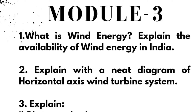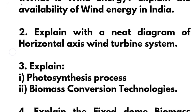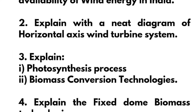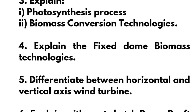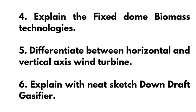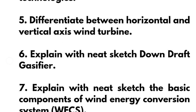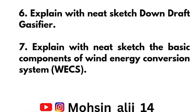In Module 3: explain wind energy and the availability of wind energy in India; explain with neat diagram the horizontal axis wind turbine system; explain the photosynthesis process and biomass conversion technologies; explain the fixed dome biomass technology; differentiate between horizontal and vertical axis wind turbines; explain with neat sketch the downdraft gasifier; and explain with neat sketch the basic components of the wind energy conversion system (WECS).